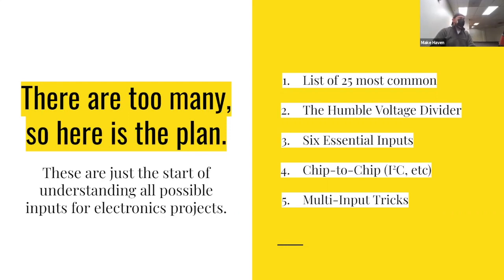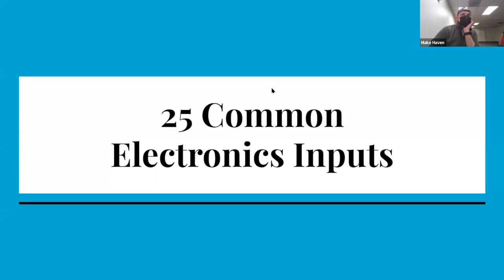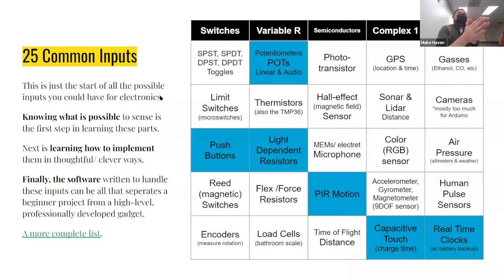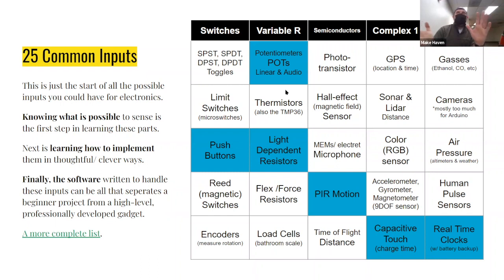This is just getting started for electronics and electrical engineering — you could totally get a degree in it. The first thing to do is itemize and list out what electronics inputs are and some examples. Here are 25 options broken down into five categories: switches, variable resistors, semiconductors, and more complex sensors. It's an overwhelming list, but it breaks things down into manageable categories.